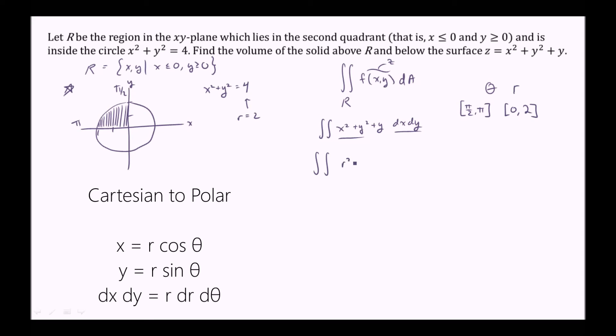So x squared plus y squared is r squared, and y is r sin theta. When we convert Cartesian or rectangular coordinates into polar, dx dy becomes r dr d theta. So here we have d theta on the very outside, so on the very outside integral we'll put our bounds for theta, which is pi over 2 to pi. And then on the inside we have dr, so we'll put the bounds of r on the inner integral. So now we have the integral, the double integral of r squared plus r sin theta times r dr d theta.